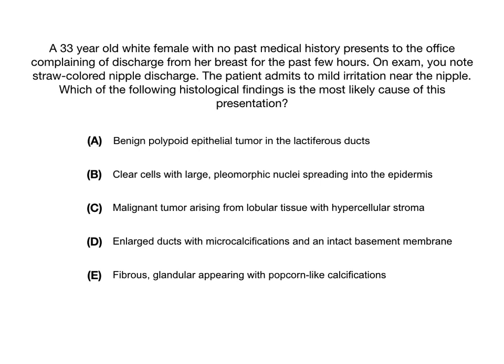A. Benign polypoid epithelial tumor in the lactiferous ducts. B. Clear cells with large pleomorphic nuclei spreading into the epidermis. C. Malignant tumor arising from lobular tissue with hypercellular stroma. D. Enlarged ducts with microcalcifications and an intact basement membrane. E. Fibrous, glandular appearing with popcorn-like calcifications.